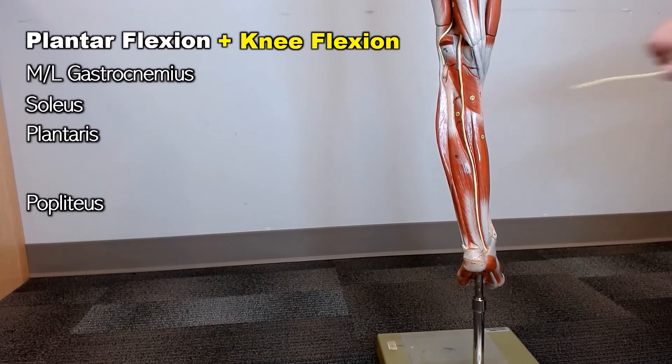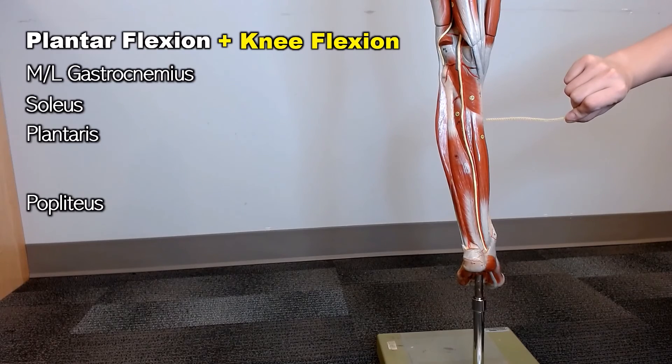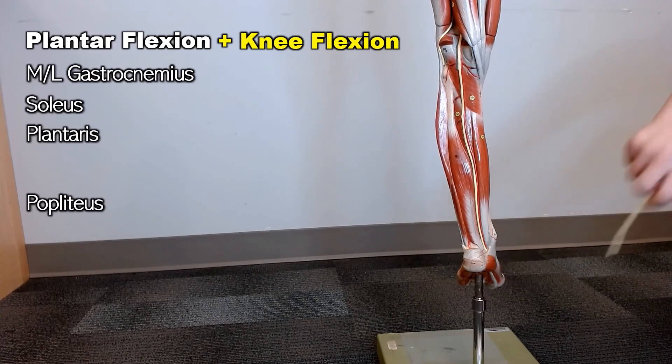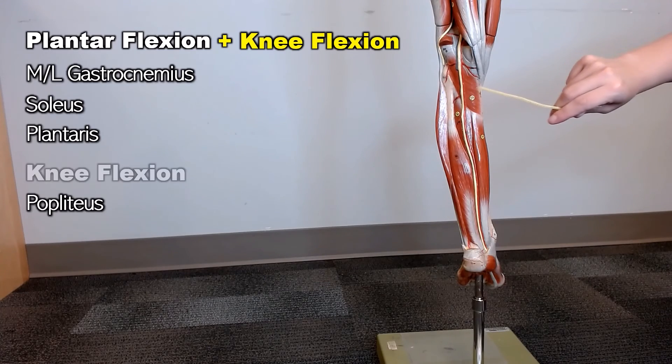This is the only one that doesn't do anything to the ankle because it's inserting onto your tibia. It's not going anywhere near your ankle, so it can't move your ankle. The popliteus just helps flex the knee.